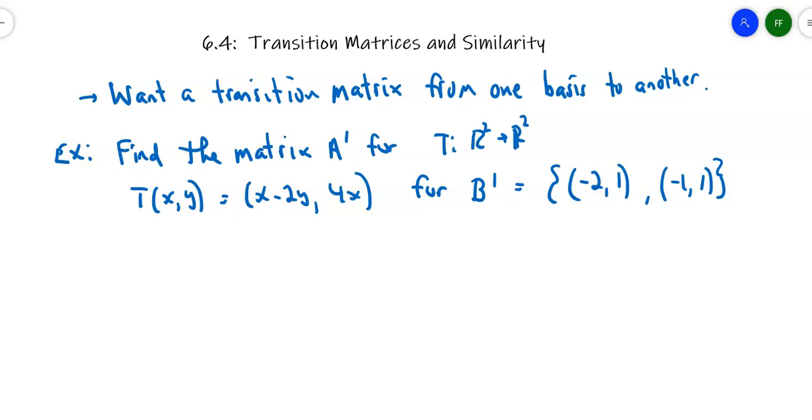The first example: find a matrix for the transformation that goes from R2 to R2. The transformation is defined as T(x,y) = (x - 2y, 4x). My new basis is {(-2, 1), (-1, 1)}. I've got a transformation, I've got a new basis, and I want a matrix that transitions from one basis to another.